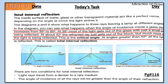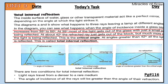At 42 degrees, this is the critical angle. When light rays reflect at this angle, the angle formed is called the critical angle. At angles greater than 42 degrees, when light reflects, that angle is called total internal reflection.